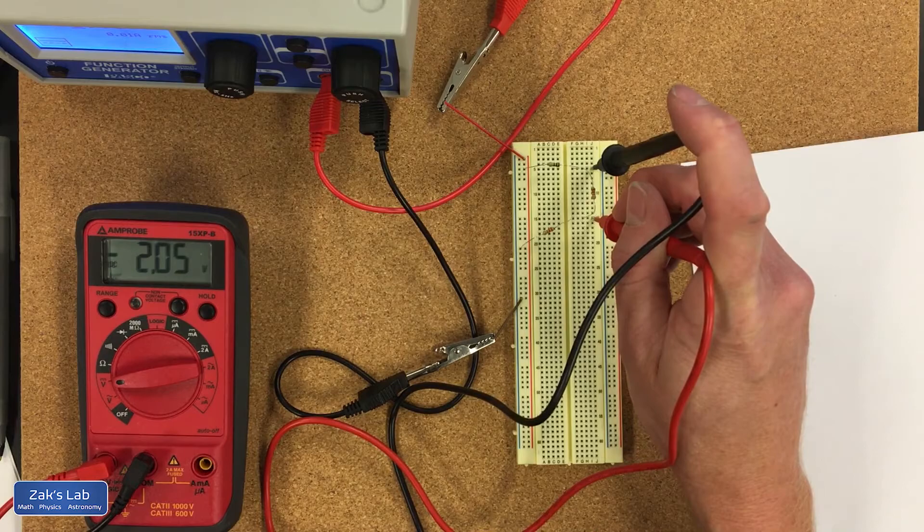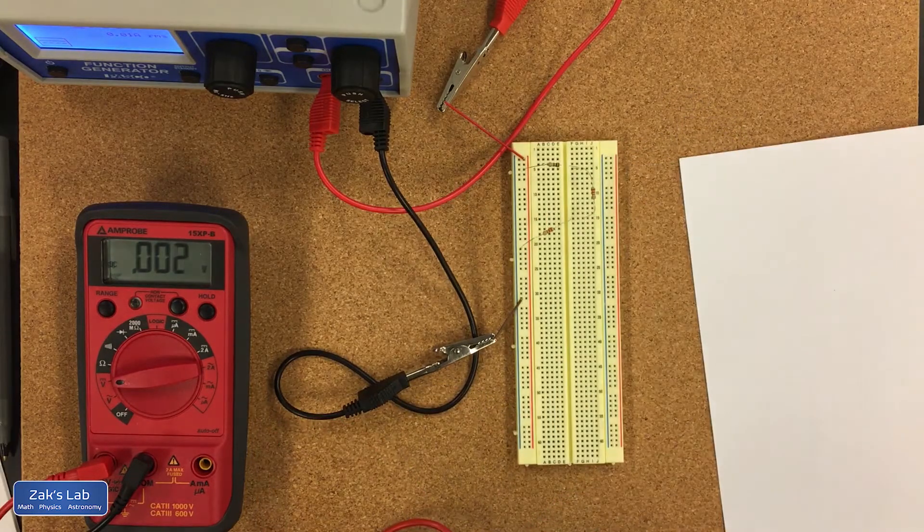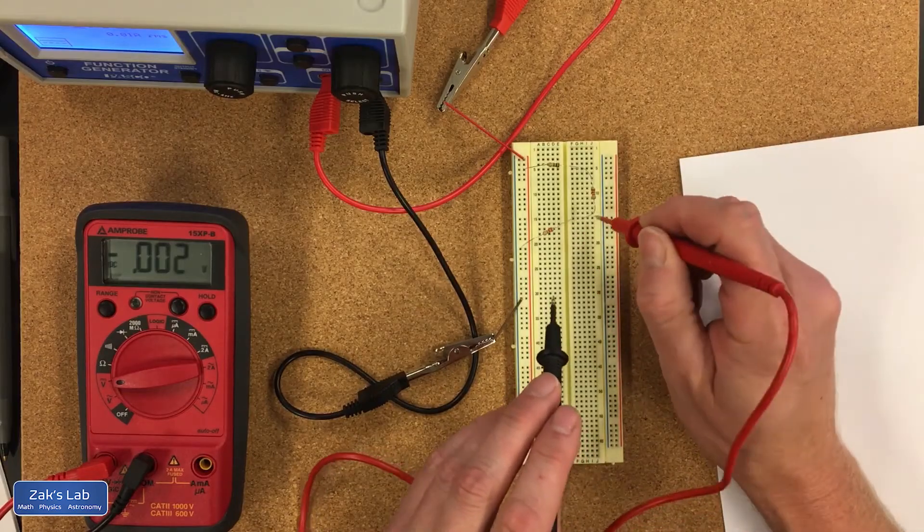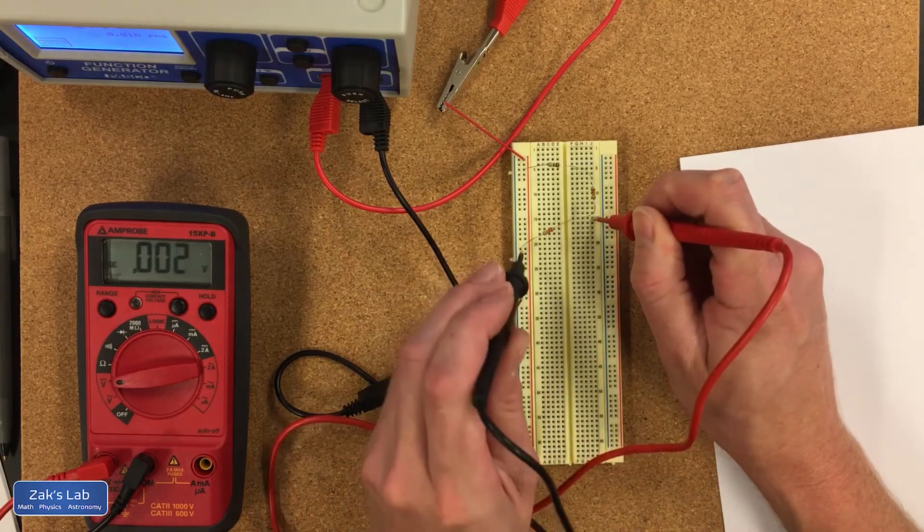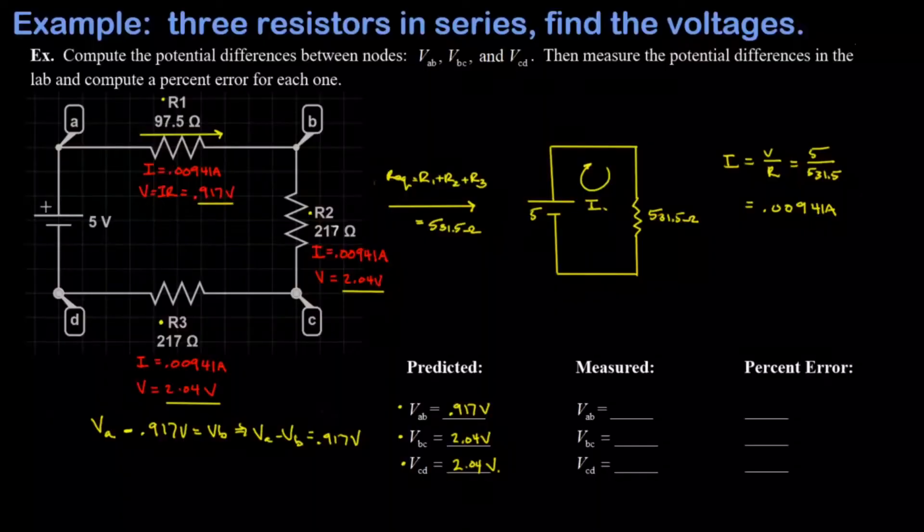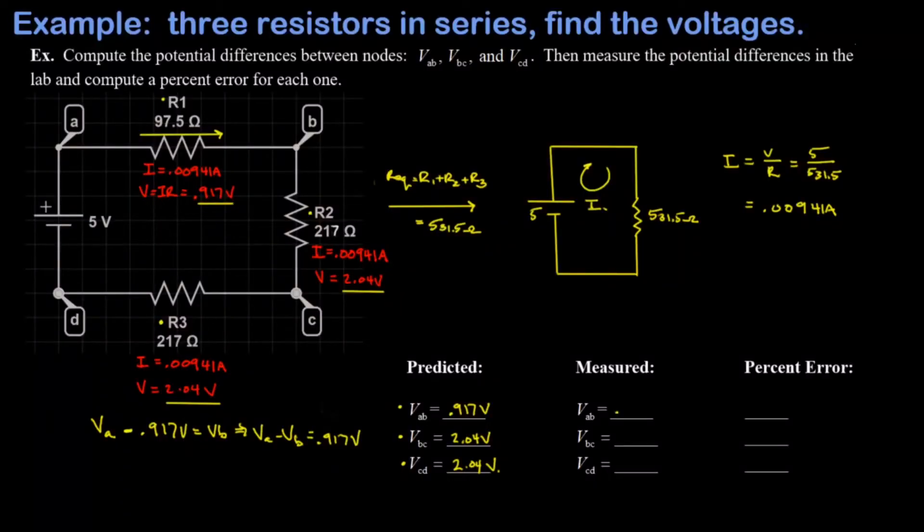Vbc was just the voltage across this second resistor and I get 2.05 volts for that. Finally Vcd was the voltage across this third resistor, so I'm going to go to the high side and low side of that and I'm getting 2.05 volts for that. So in the lab, Vab came out to 0.925, Vbc came out to 2.05, Vcd came out to 2.05, and we'll get a percent error on each of these.